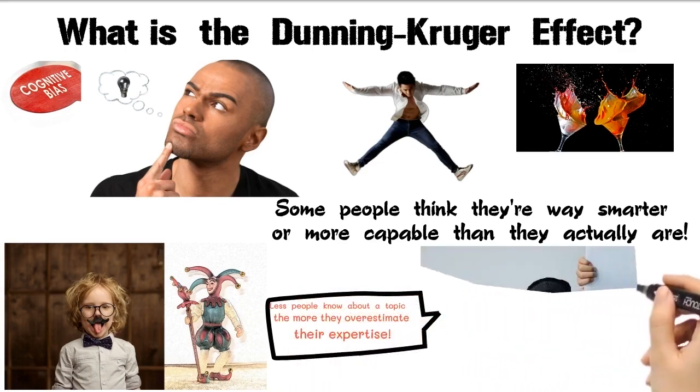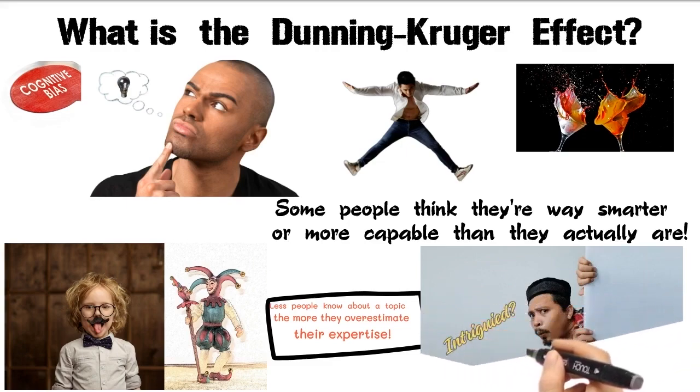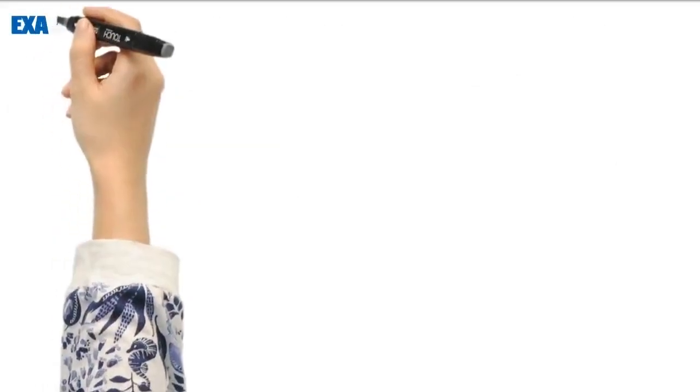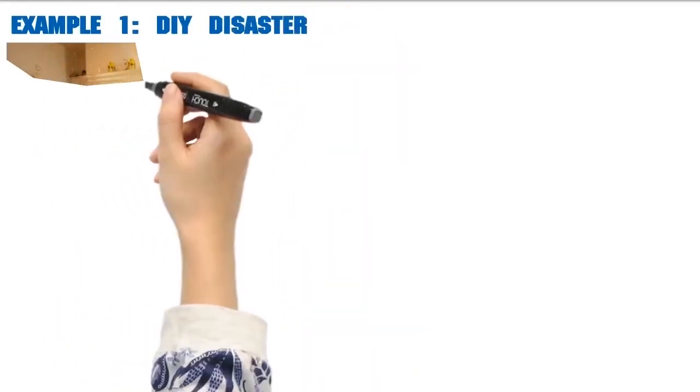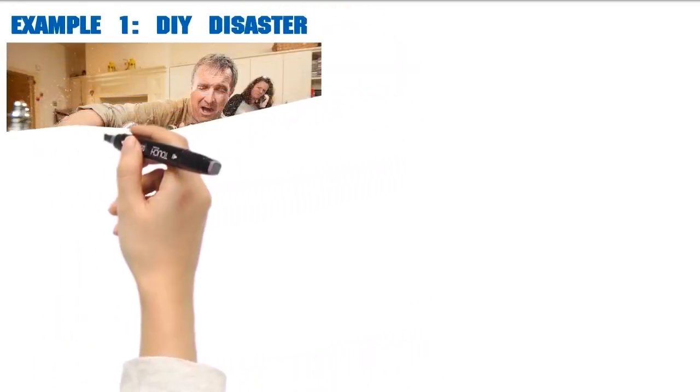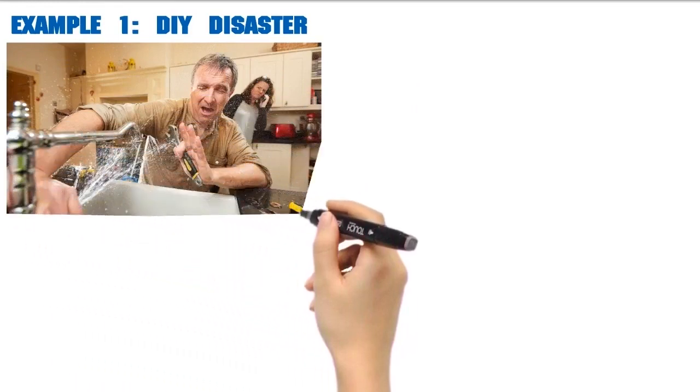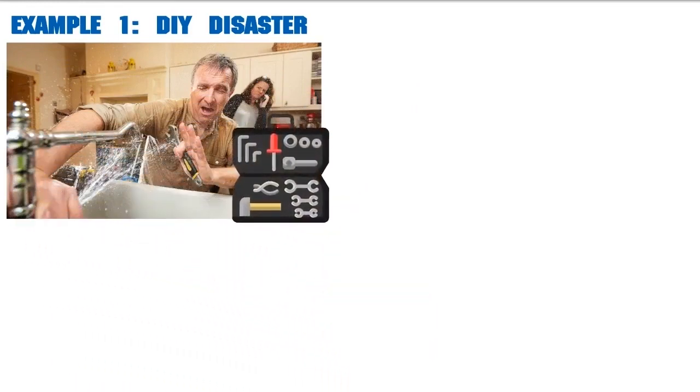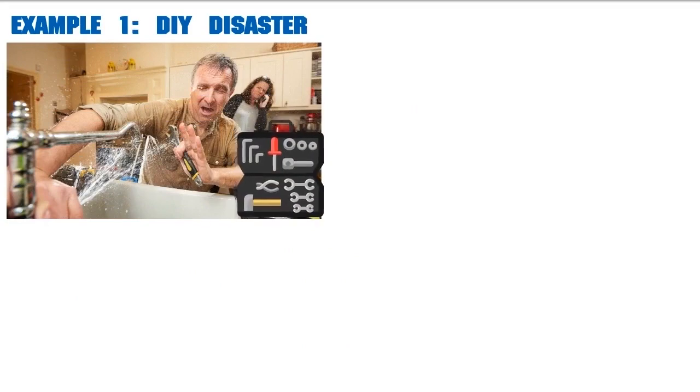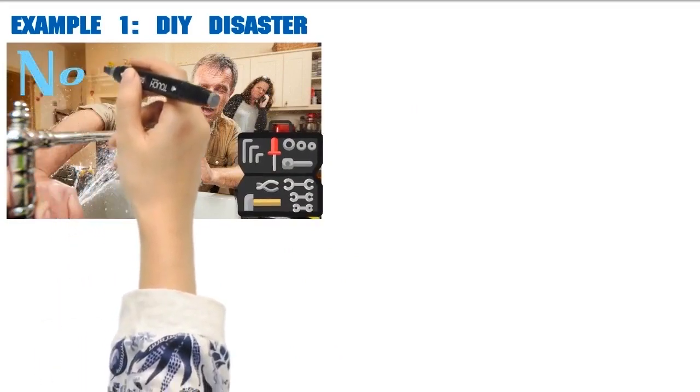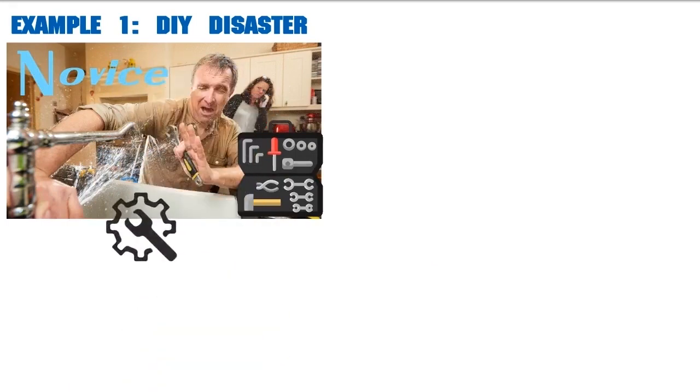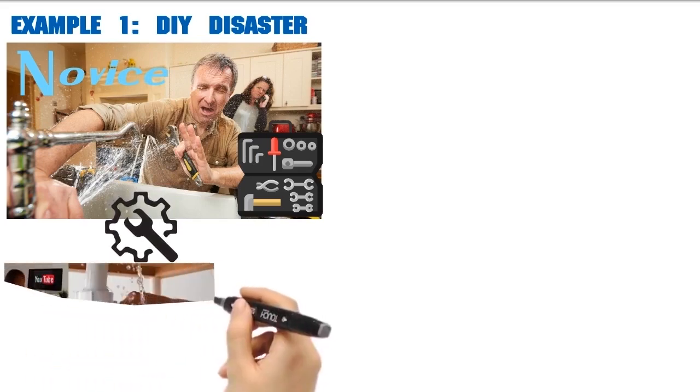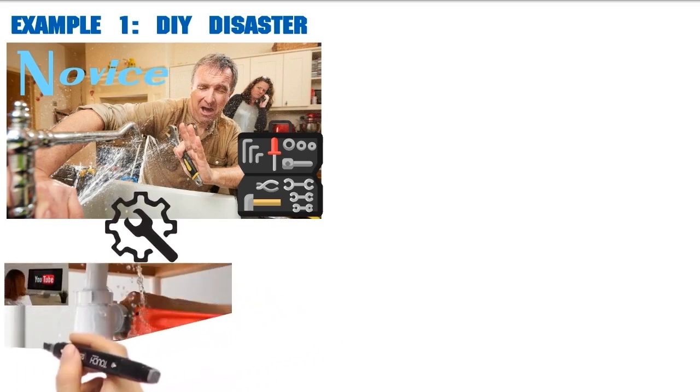Intrigued? Let me share some real life examples. Look at the first example, I'm going to call it the DIY Disaster. Meet Bob, our unsuspecting DIY enthusiast. Armed with a toolbox and a dream, Bob decides to tackle a complex plumbing issue at home. Little does he know he's a novice in the world of pipes and valves. But fueled by the Dunning-Kruger Effect, he confidently dives in, creating waterwork masterpieces that would make a plumber cringe. Turns out fixing a leaky faucet isn't as easy as it looks on YouTube.